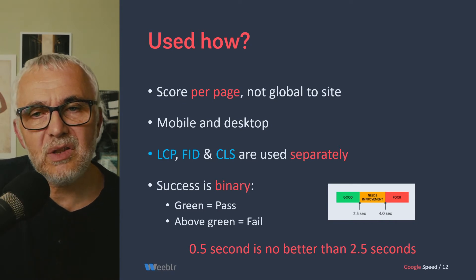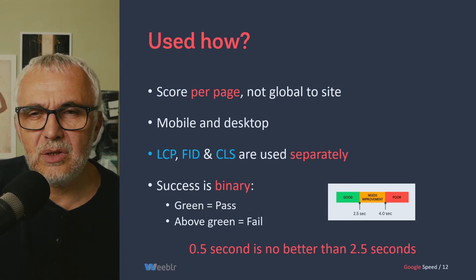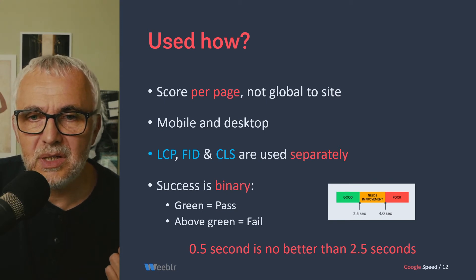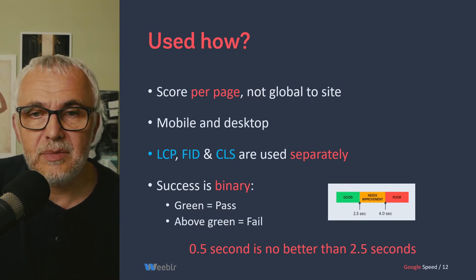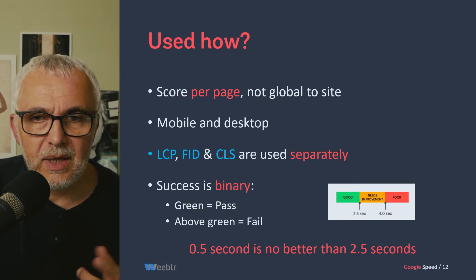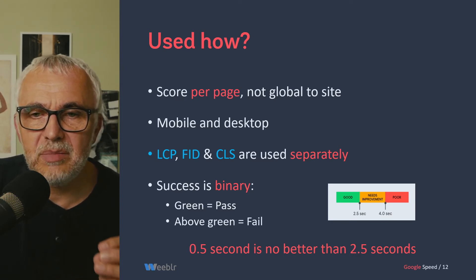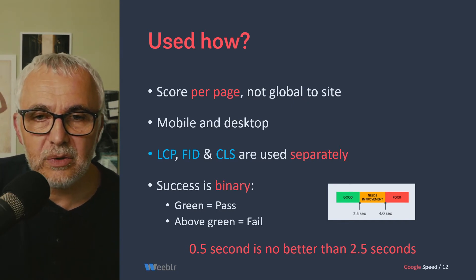So how is this information used — the three numbers? The important thing to know is that it's a score per page, so each page has a grade. It's applied to both mobile and desktop. Previously, in 2018, speed evaluation was only applied to mobile devices. Now, speed is important for any kind of content. These three numbers are used separately, meaning you can be good for largest contentful paint and bad for CLS.